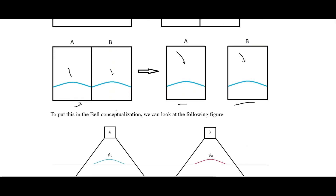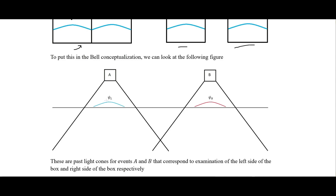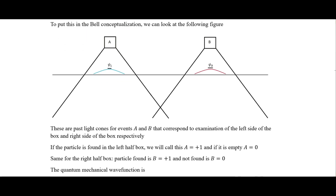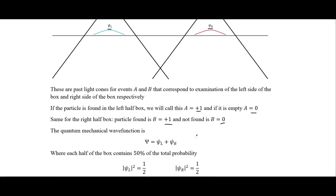We can put this in the Bell conceptualization discussed in a previous video. We have the wave function in the left part of the box and the wave function in the right part — these are the past light cones for events A and B, corresponding to examining the left side of the box in Paris and the right side in Tokyo. If the particle is found in the left half-box, A equals +1; if the left half-box is empty, A equals 0. Likewise, if it's in the right half-box, B is +1, and if it's in the left, B equals 0. The quantum mechanical wave function is a superposition of these two wave functions, each half of the box containing 50% of the total probability.